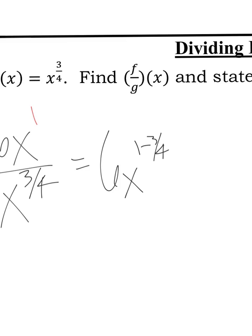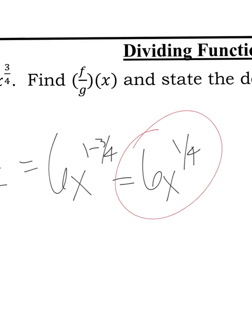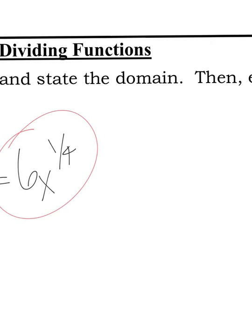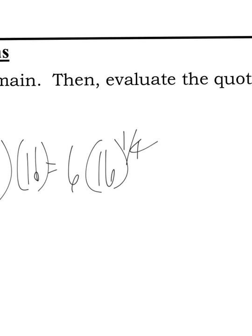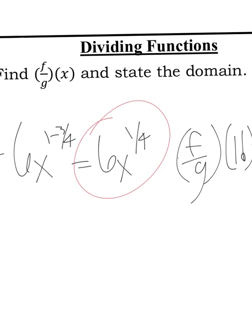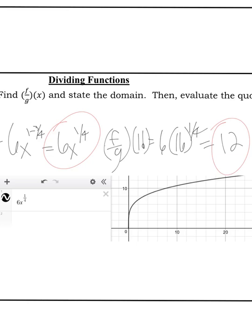and 4 minus 3 is 1. You could just think of it as, if I have $1 and I take away 3 quarters, I'm left with 1 quarter. So my final answer is 6x to the 1 4th power. Now I just need to plug that in. Plug in 16, I should say. So f over g of 16 equals 6 times 16 to the 1 4th power. And 16 to the 1 4th power is 2. 2 times 6 is 12. That's that answer. Now let's just look at the graph of 6x to the 1 4th. Here you can see that it starts at 0, and it goes up and to the right. So my domain is x is greater than or equal to 0.